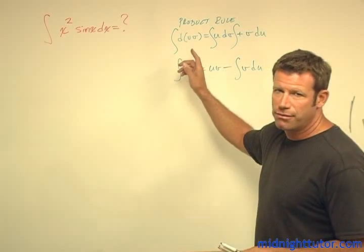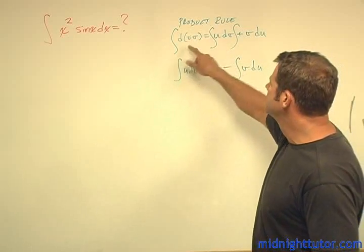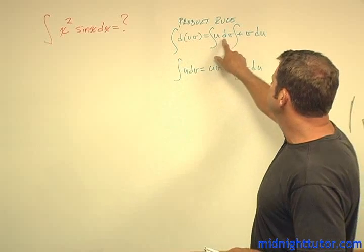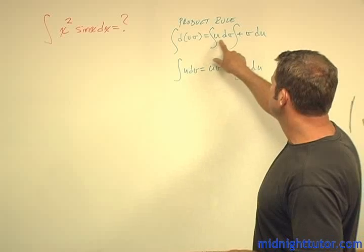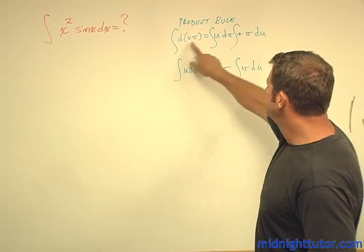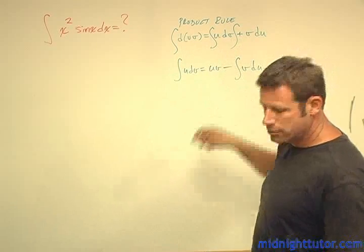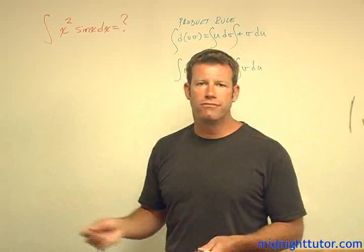But you can always derive it in a few seconds by saying the product rule is d(uv) = u dv + v du. Then you integrate both sides and you just rearrange terms, so you get the integral of u dv is uv minus the integral of v du. So now the thing is we have to choose our u's appropriately.